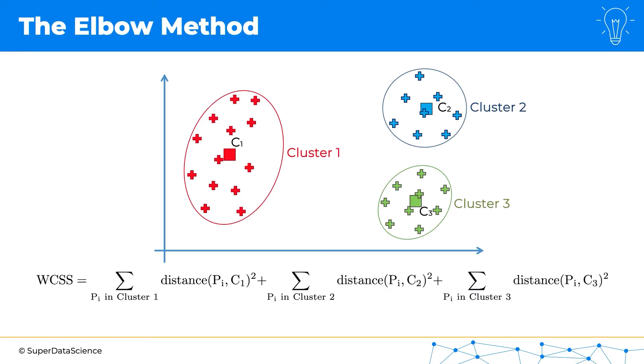And so we can continue increasing number of clusters until we get to the maximum number of clusters, which equals the number of data points that we have. And then WCSS will be actually exactly zero, because each data point is its own centroid and the distance is zero.